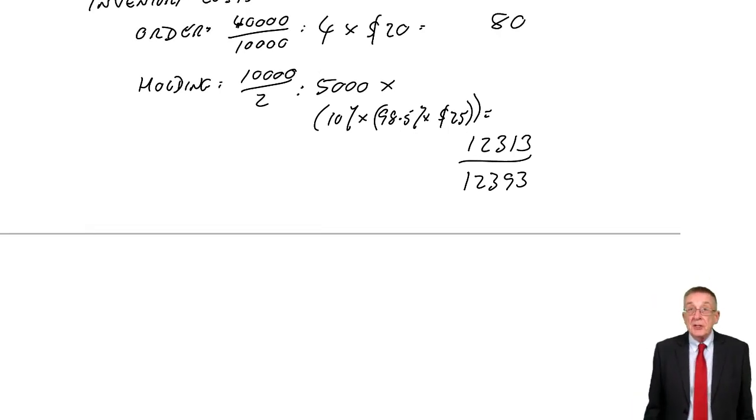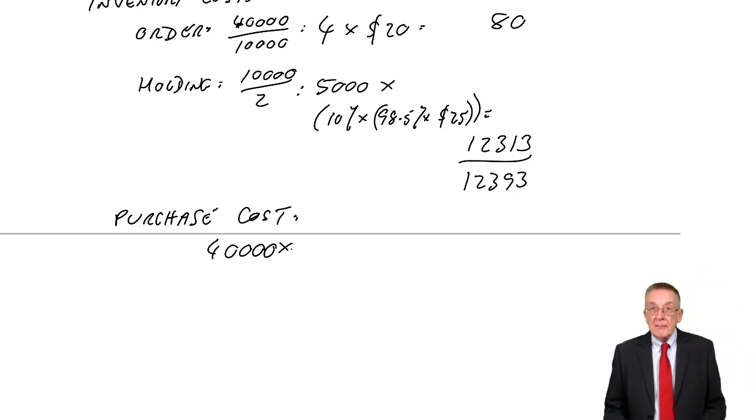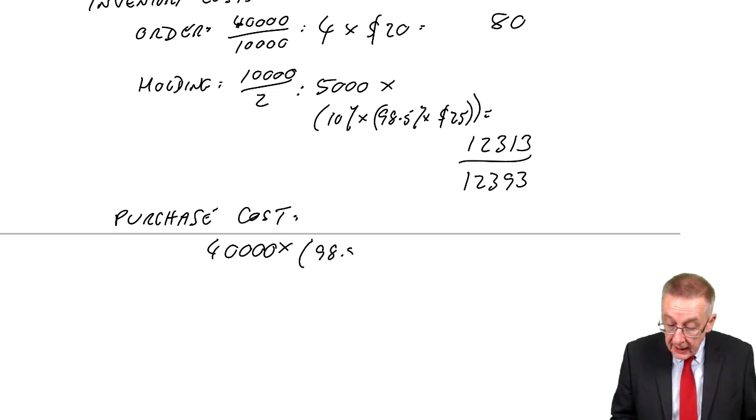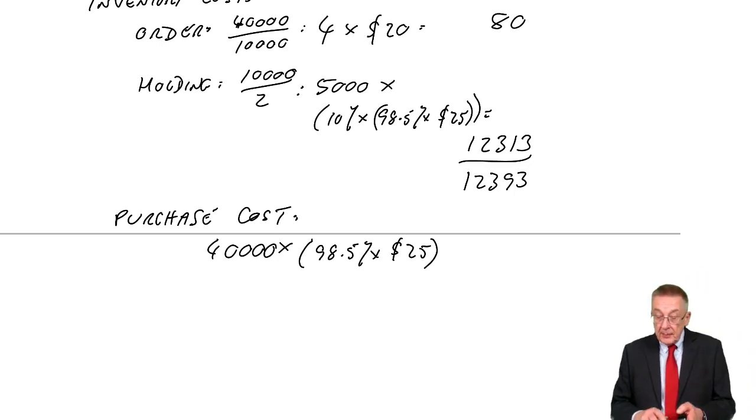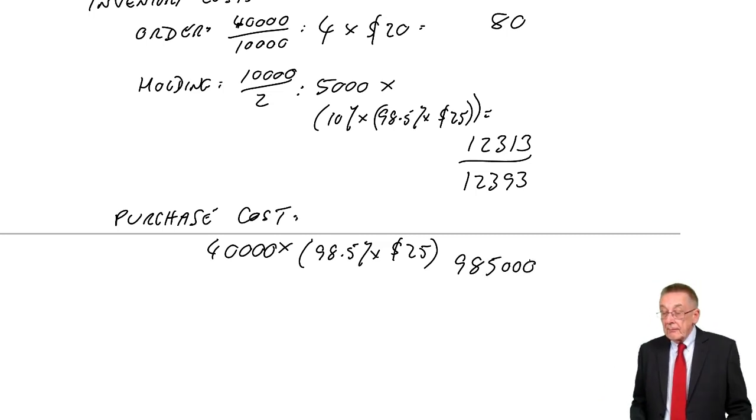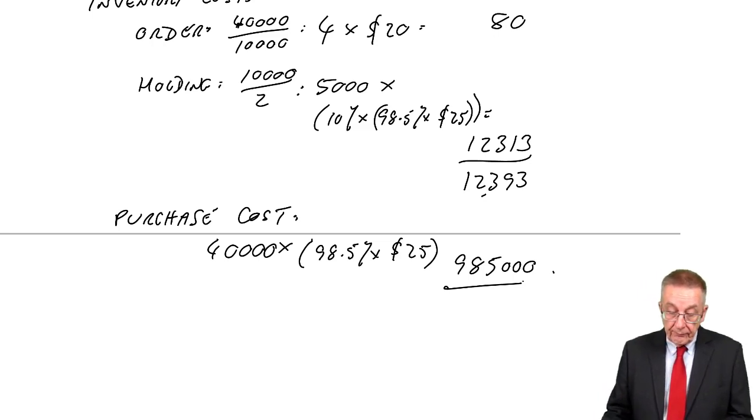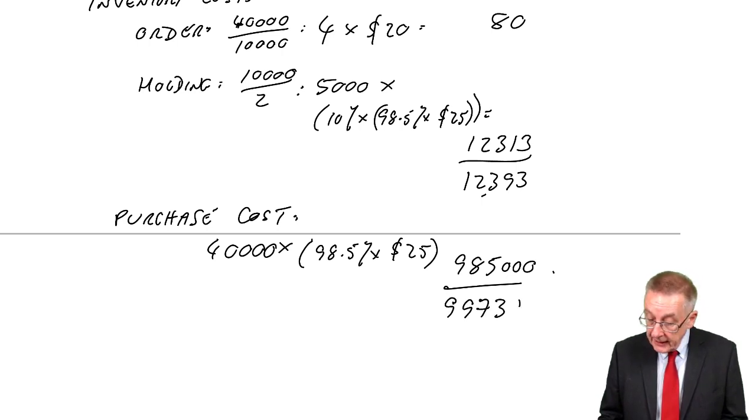But again, it might be worth paying so much more because we're getting a bigger discount. So finally, what happens to the total purchase price? Over the year, we're still buying 40,000. But the cost per unit falls to only 98.5% of $25. So the total purchase cost is $985,000. And so overall, is it going to be better or worse? Inventory costs are a lot higher. Purchase costs lower. The two together: $997,393.